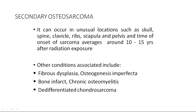Secondary osteosarcoma locations include skull bones, spine, clavicle, ribs, scapula, and pelvis — all flat bones of the body. Associated conditions include fibrous dysplasia, osteogenesis imperfecta, bone infarct, chronic osteomyelitis, and dedifferentiated chondrosarcoma. In these patients, secondary osteosarcoma is most likely to develop.